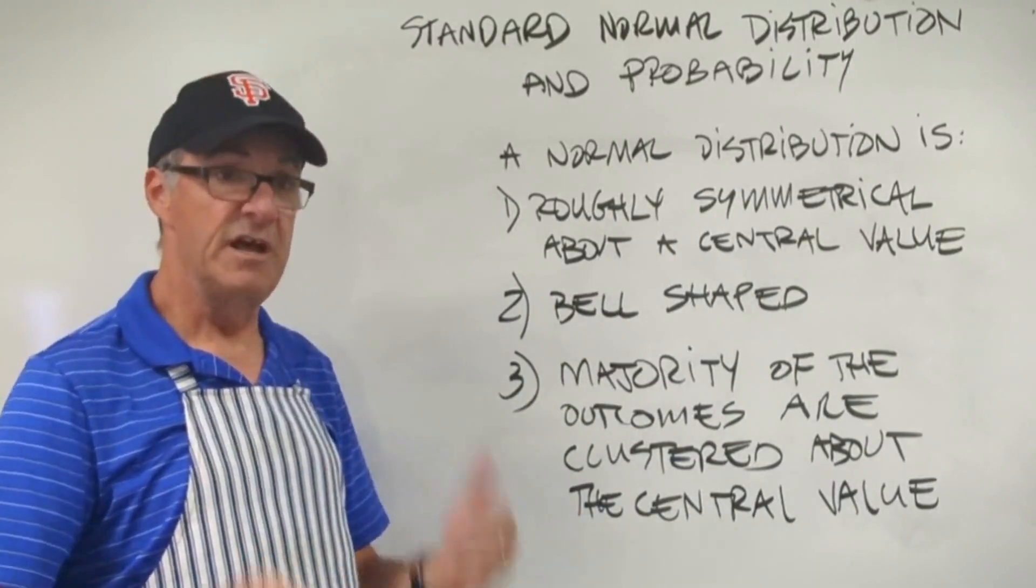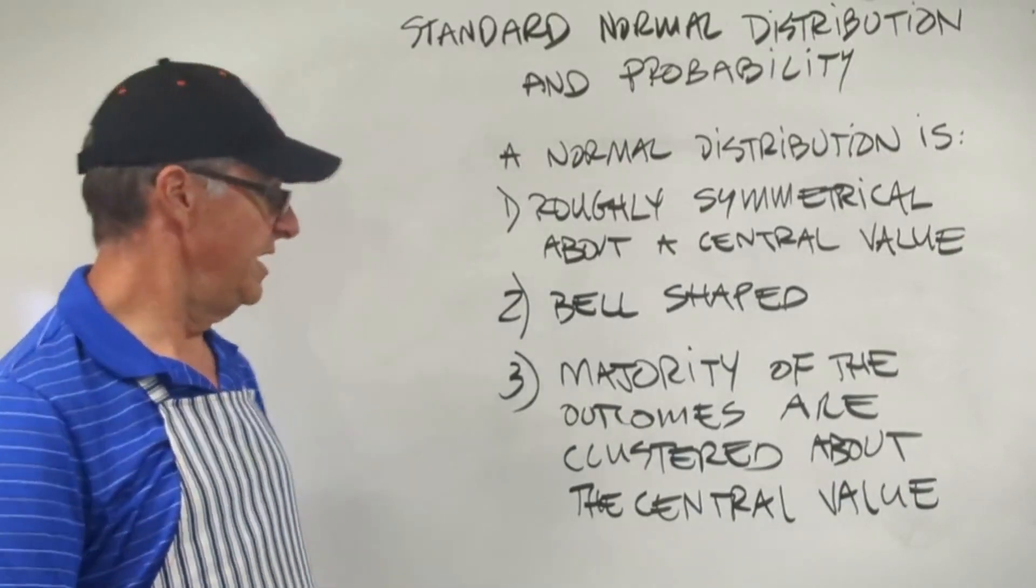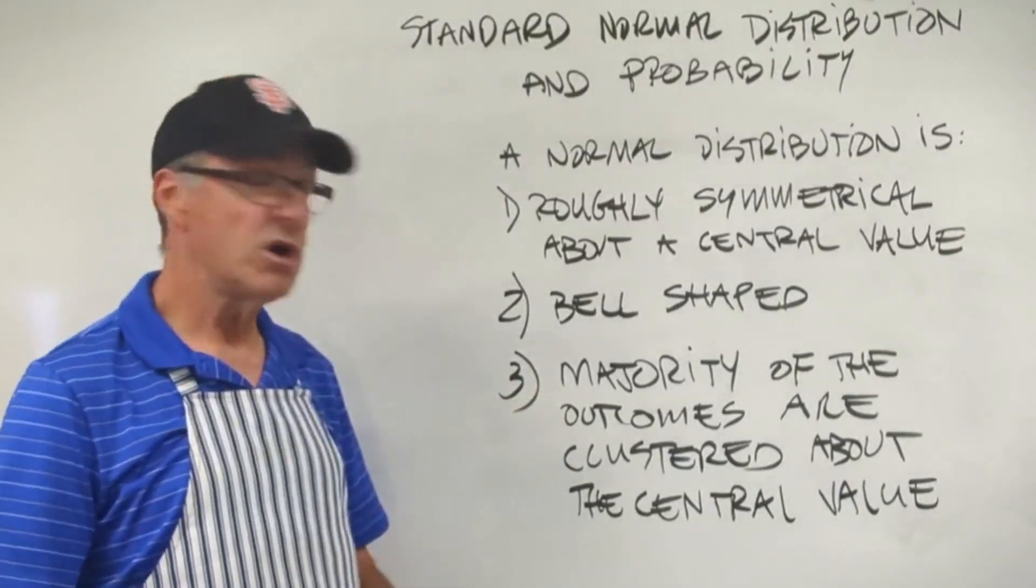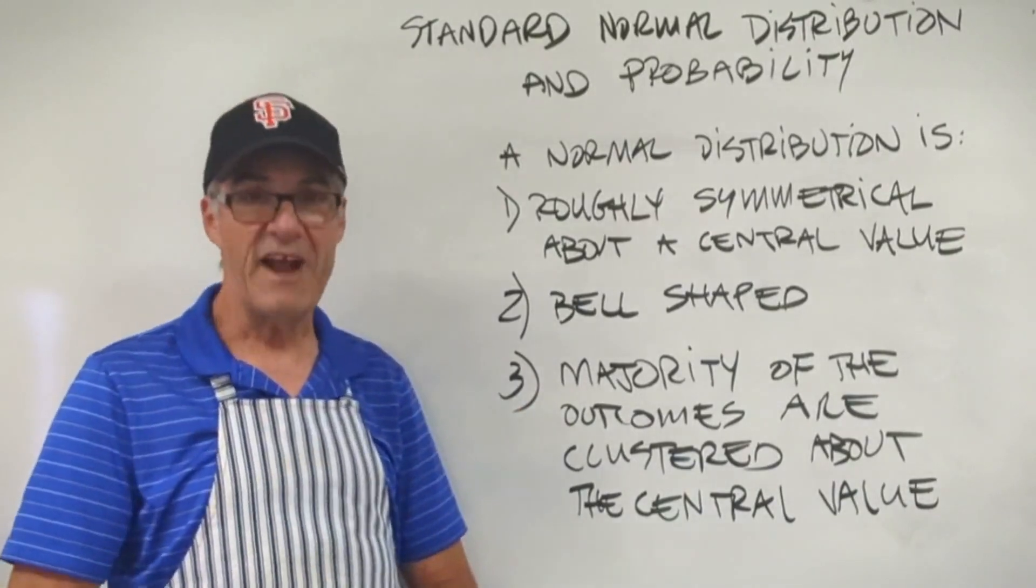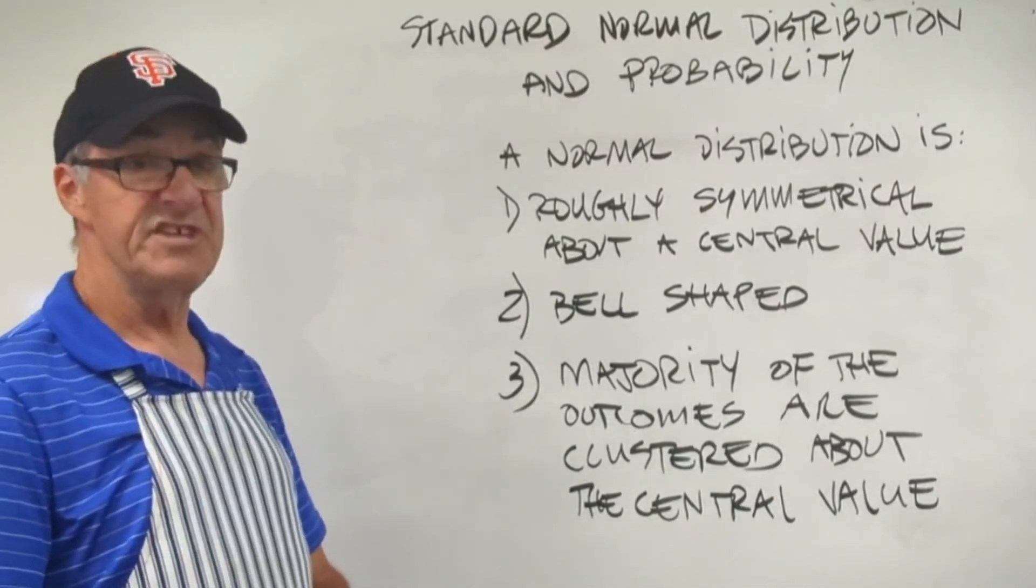You may have heard the expression, the bell-shaped curve. That refers to a normal distribution. And then finally, the majority of the outcomes are clustered around that central outcome or value. So let's take a look at the graph.